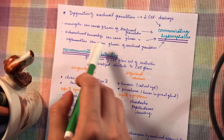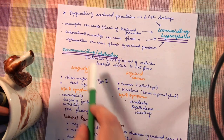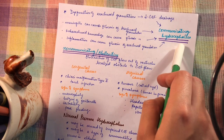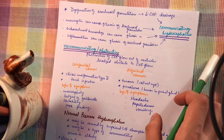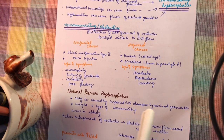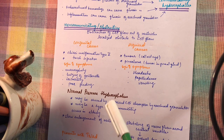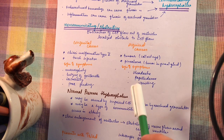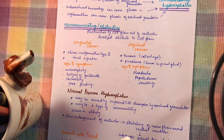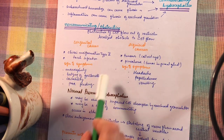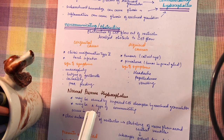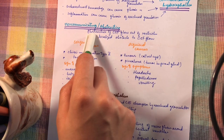Meningitis, subarachnoid hemorrhage, and inflammation can cause fibrosis of the arachnoid granulations, leading to communicating hydrocephalus. Next is non-communicating, or obstructive, hydrocephalus. As the name implies, there is some obstruction in CSF flow from the ventricles. Causes are divided into congenital and acquired. Congenital causes include Chiari malformation type 2 and TORCH infections, which cause scarring of the meninges leading to obstructive hydrocephalus.